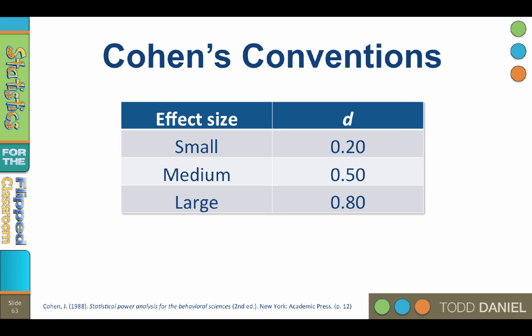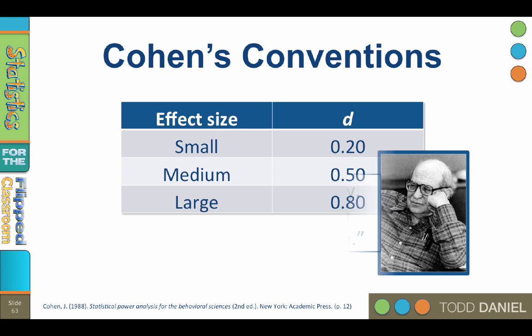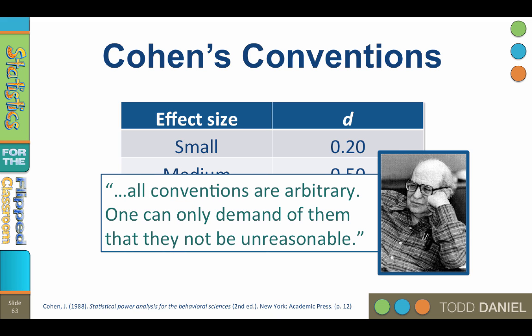Jacob Cohen gives us conventions for interpreting Cohen's d effect size: small, medium, and large. You may be questioning where these numbers came from — didn't Fisher use 0.05 because it was convenient? Why should we accept these suspiciously round-numbered conventions from Cohen? Well, if you think these conventions are arbitrary, Jacob Cohen would agree with you. He wrote: 'All conventions are arbitrary. One can only demand of them that they not be unreasonable.' Cohen went on to explain why these conventions are reasonable, or at least useful — they are based on probabilities.